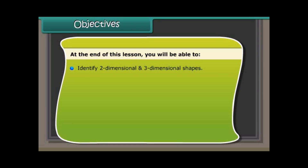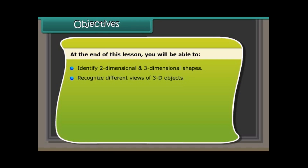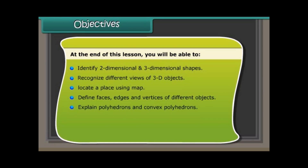Objectives: At the end of this lesson you will be able to identify two-dimensional and three-dimensional shapes, recognize different views of 3D objects, locate a place using a map, define faces, edges and vertices of different objects, explain polyhedron and convex polyhedrons, describe prisms, discuss pyramids, and apply Euler's formula.